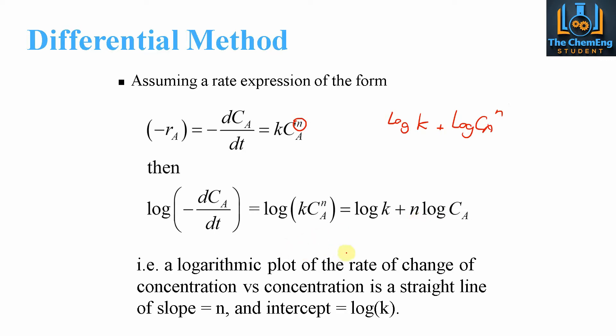This is in the form of a straight line equation because we have Y equals MX plus C. This would be the Y term, this here is the Y intercept, this would be the X value, and N here would be our gradient or the slope.